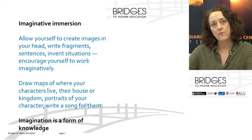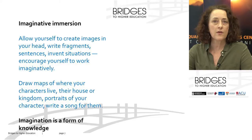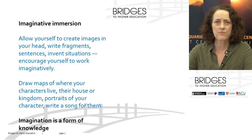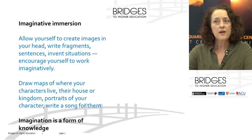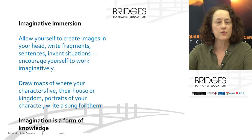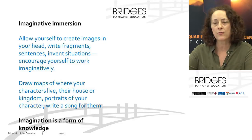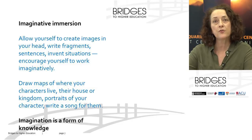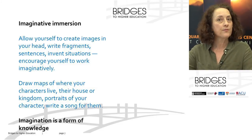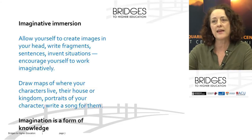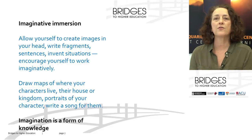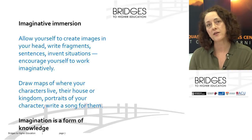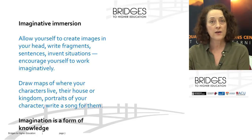I encourage my writing students to draw a map. It can be beautiful or sketched — it doesn't matter. You might do it on the computer, your phone, or on paper. Map where your characters live. Think about the parts of the map that are a bit unknown, a bit blurry. What does the suburb look like? Their house? What's in their living room? How high is that mountain? It's entirely up to you to be inventive. If it's a fantasy piece, you'd want a map of the kingdom. Sometimes students do visual portraits of their characters or write songs. Imagination is another form of knowing that you can tap into.